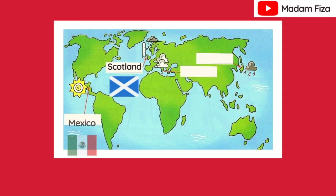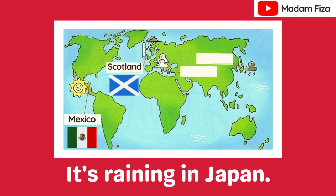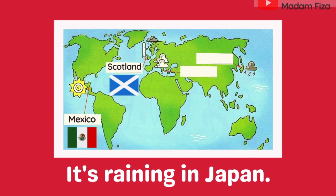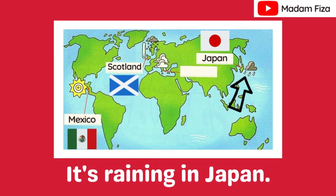Alright, moving on to the next sentence. It's raining in Japan. Where is the symbol of rainy weather? Yes, that is Japan. It's raining in Japan.